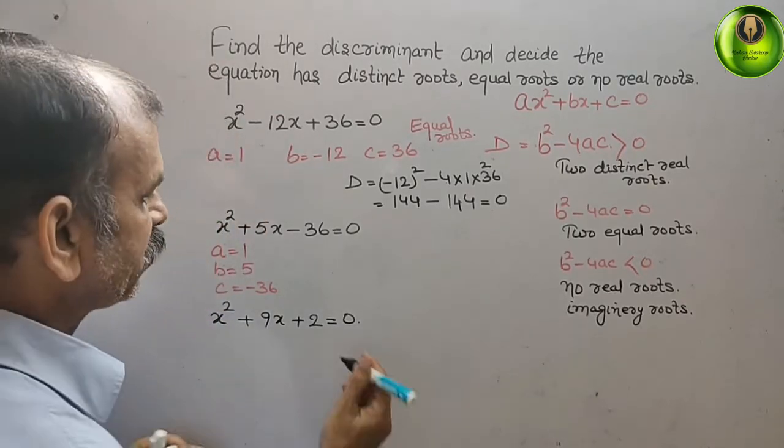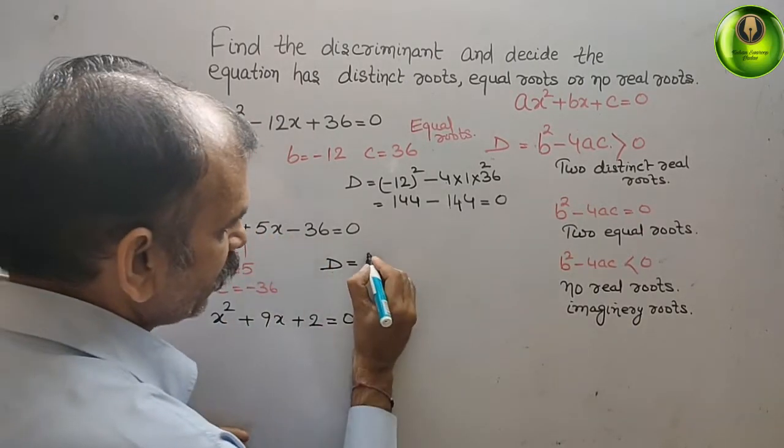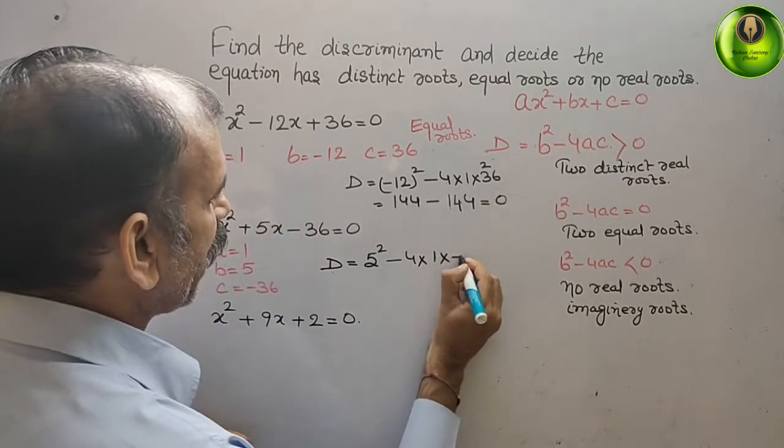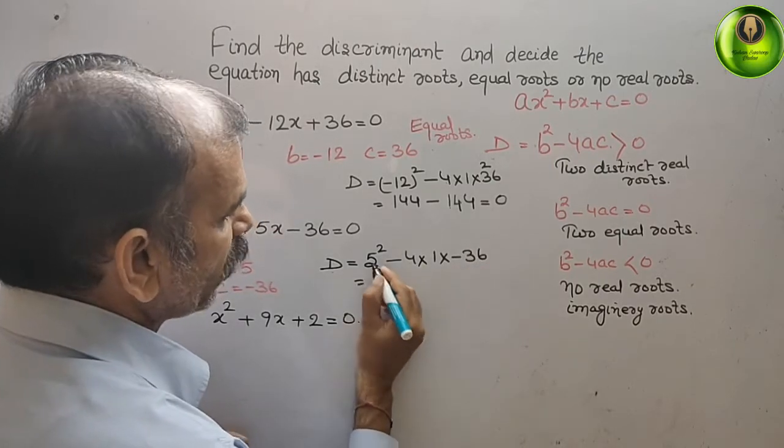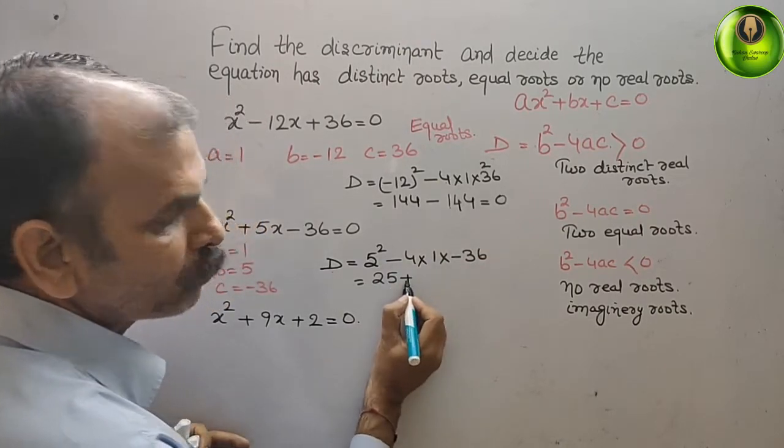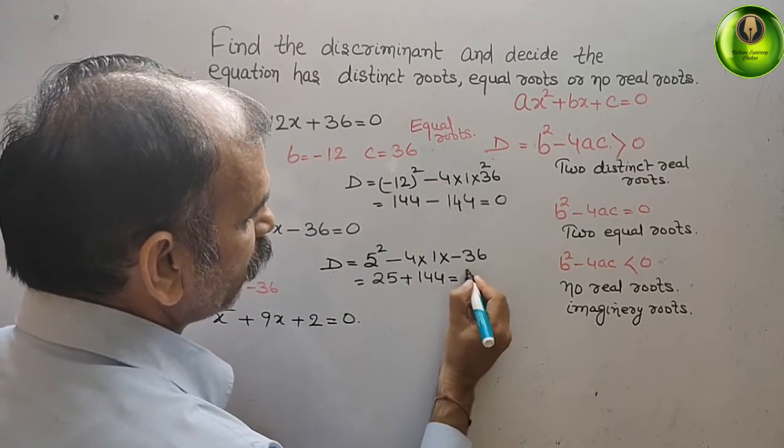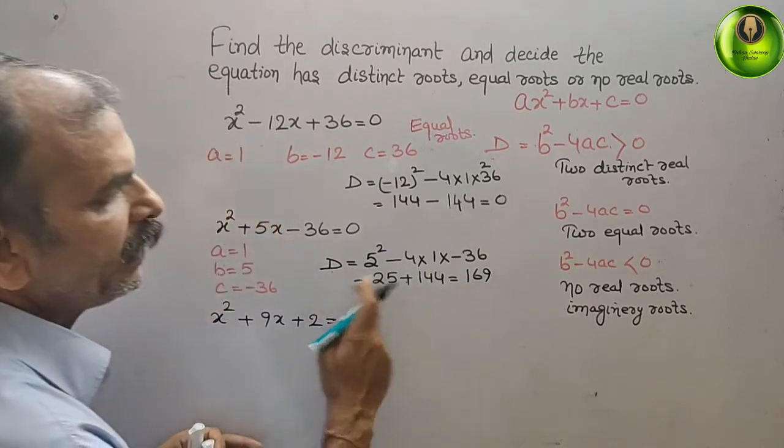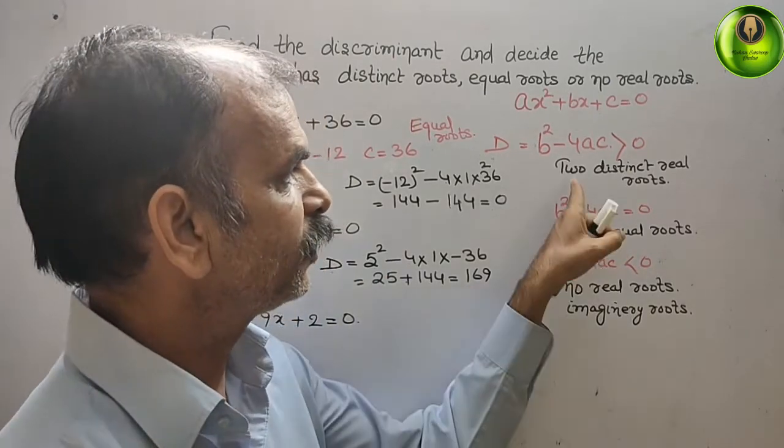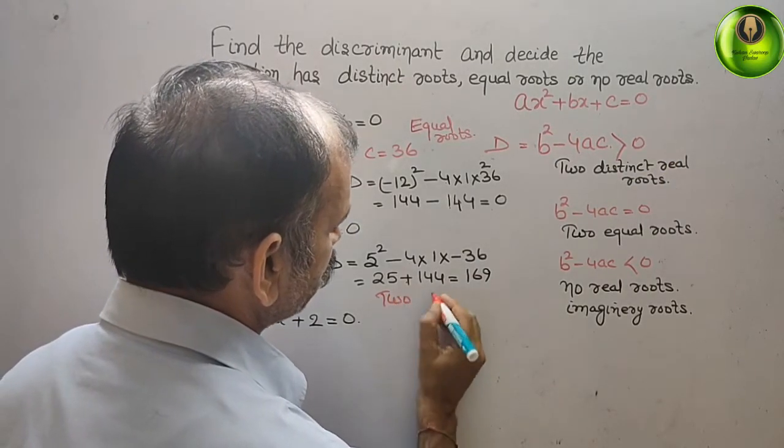Now we will go for the discriminant. That is your d, 5 square that is b square, minus 4ac, 4 into 1 into minus 36. So you can see 5 square is 25 plus, minus into minus is plus, 4 into 36 is nothing but 144. That is equal to 169. So discriminant is 169. That is positive. So what is your answer? 2 distinct real roots.